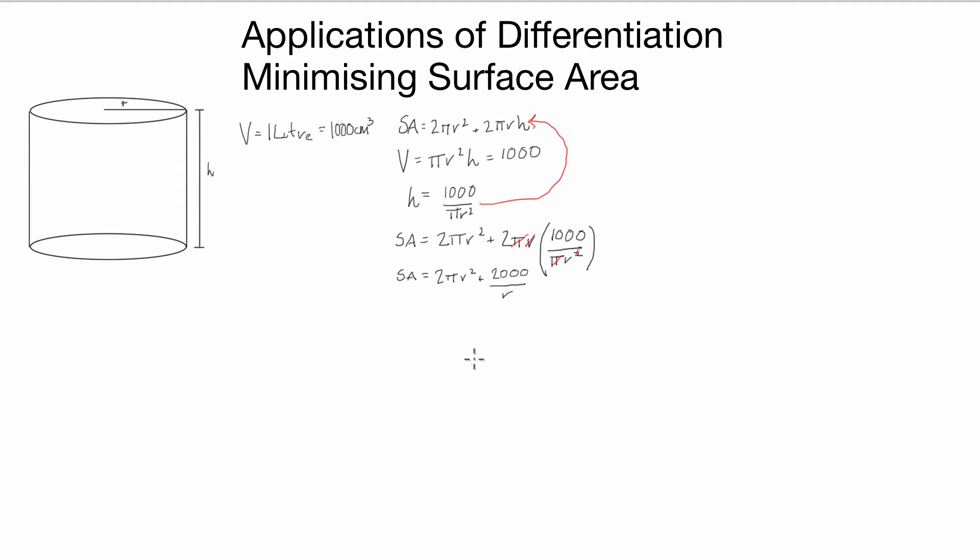Once we've got this, we've got our surface area in terms of only one variable which is the radius. To optimize, we're looking for when the derivative of surface area in terms of radius is equal to 0. So this is what we're looking for.